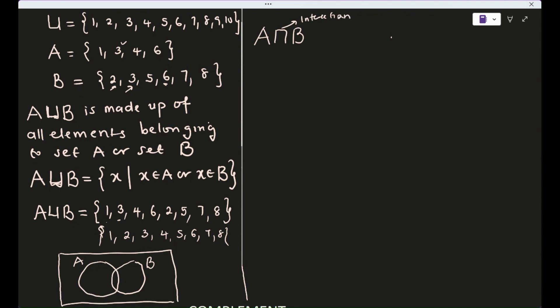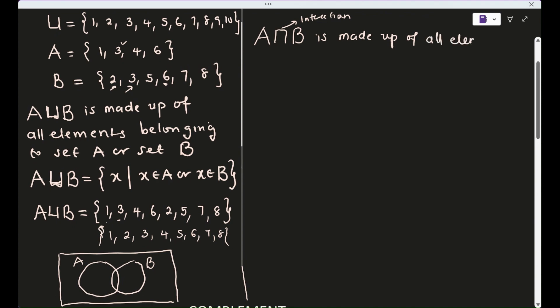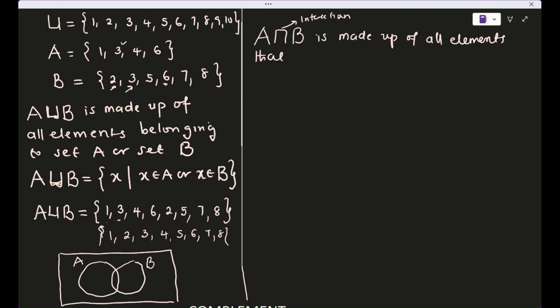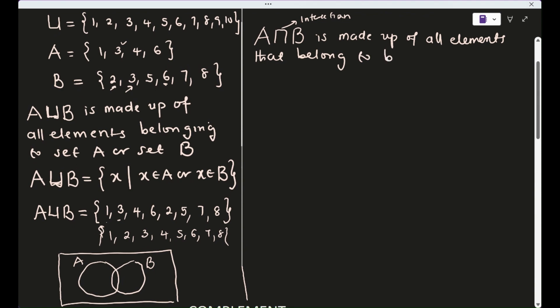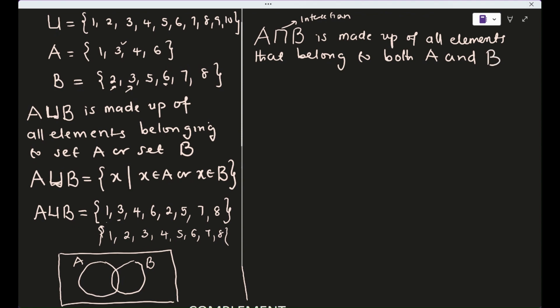A intersection B is made up of all elements that belong to both A and B. Mathematically, A ∩ B is the set of all X such that X is in A and X is in B. Notice the key difference: union uses 'or', while intersection uses 'and'.